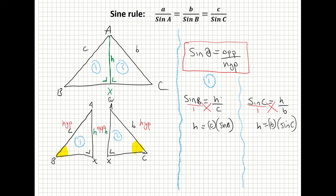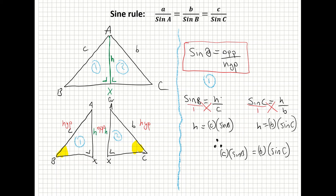We now have two expressions for h: c·sine B and b·sine C. Since both equal h, they are equal to each other. Therefore, c·sine B = b·sine C.